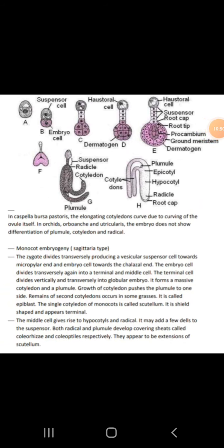The embryo development stages show the suspensor cell followed by the embryo cell. The embryo cell eventually forms the dermal layer. Through successive divisions, the structures become: suspensor, radicle, cotyledon, and plumule. The embryo cell divides transversely into a terminal cell and a middle cell; the terminal cells give rise to the hypocotyl and radicle.